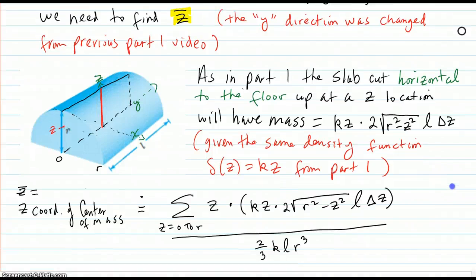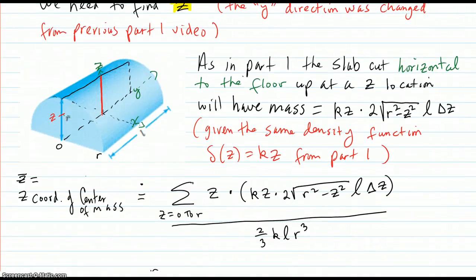So as in part one, you take your slab cut horizontal to the floor up at a Z location. It's some kind of rectangular cut. And we are assuming that our density function is still KZ, getting more dense as we rise. So we have our mass of that slab is KZ, that's the density, times the volume. So it's mass per volume times volume is mass.